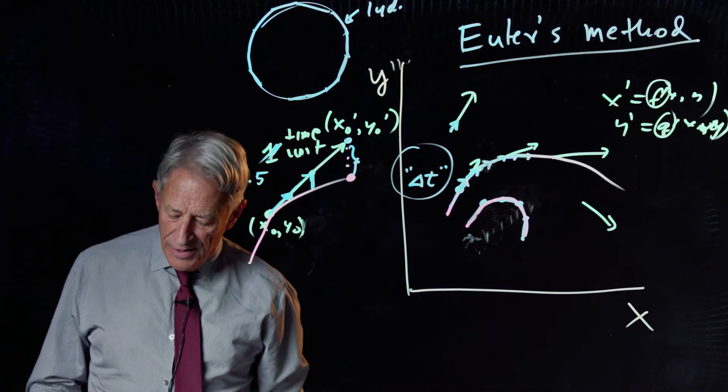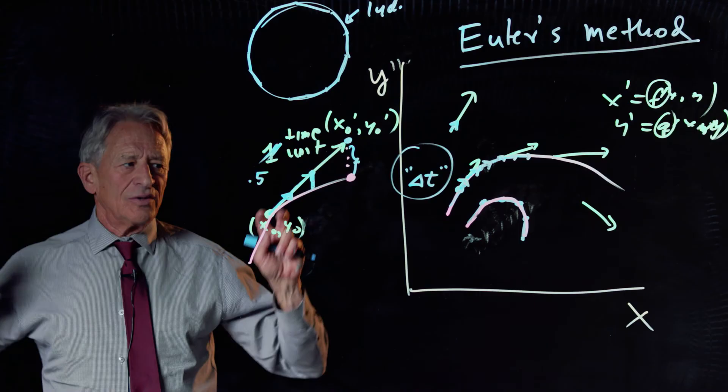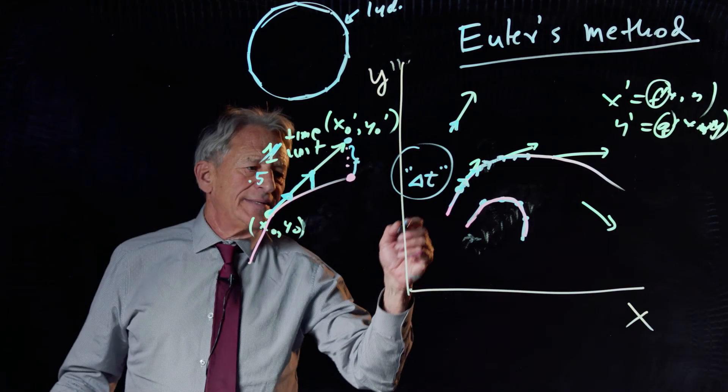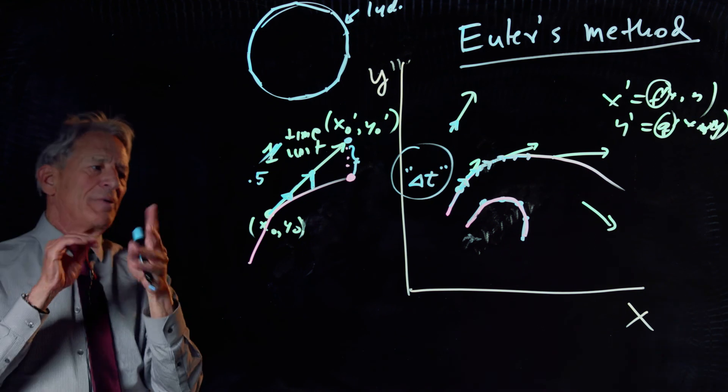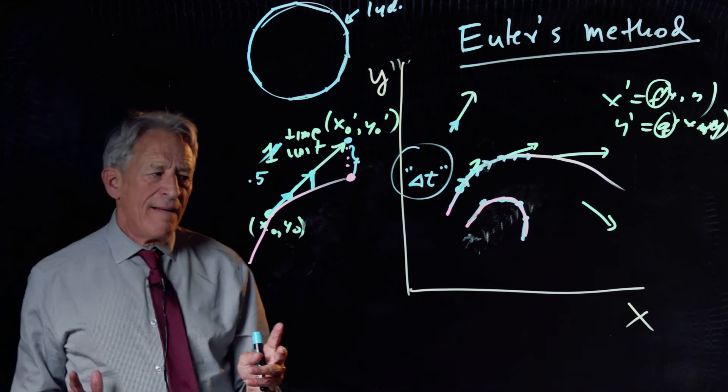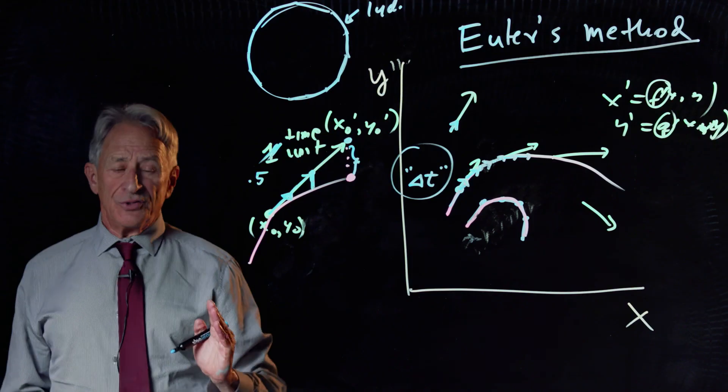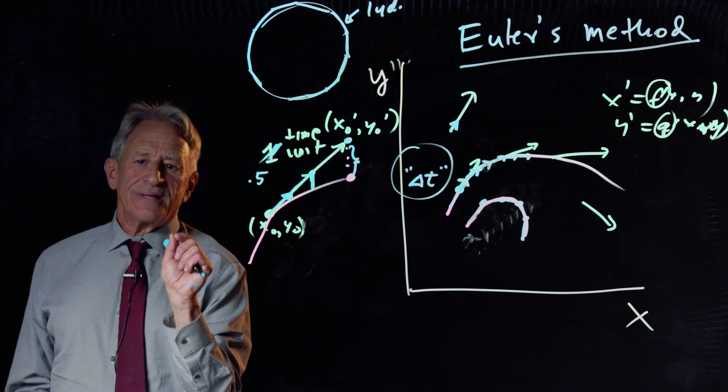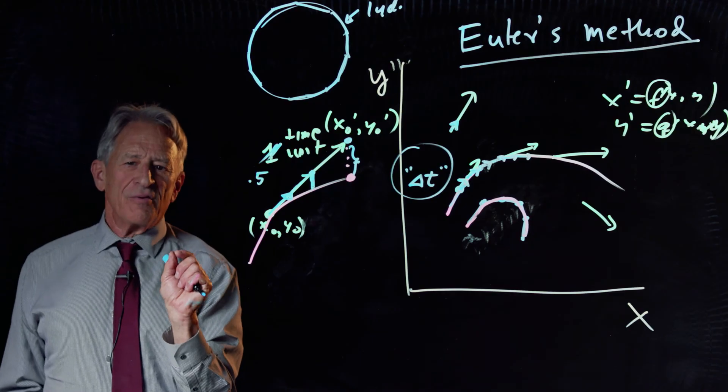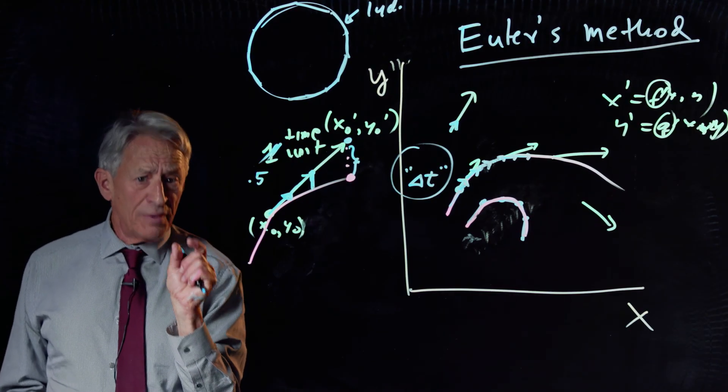So the key here is that in calculus, we let delta T go to zero and we try to prove theorems about the red curve. But here, we're just not going to do that. We're not going to let delta T go to zero. We're going to keep delta T very, very small, but finite.